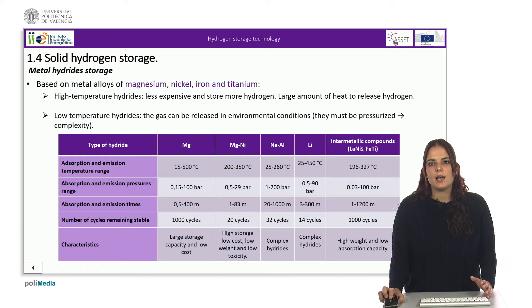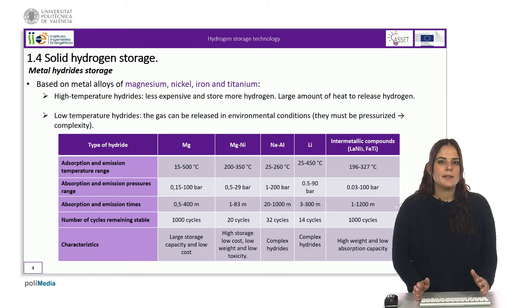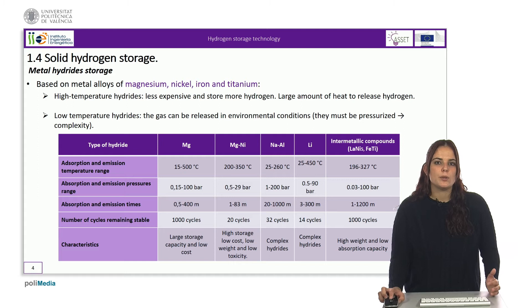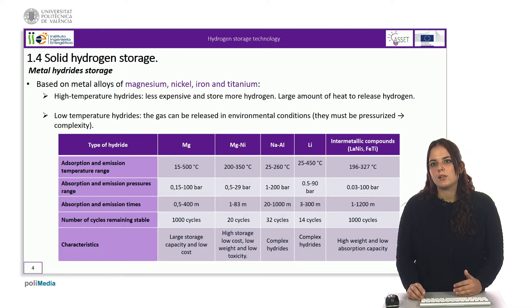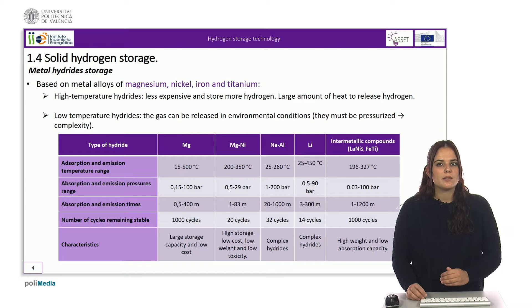In general, metal hydrides are divided between high and low temperature hydrides. High temperature hydrides are less expensive and store more hydrogen than low temperature hydrides; however, they require a large amount of heat in order to release hydrogen. On the other hand, in low temperature hydrides, the low temperature can be a problem because the gas is released too easily under environmental conditions. In order to solve this problem, low temperature hydrides must be pressurized, which increases the complexity of the process.